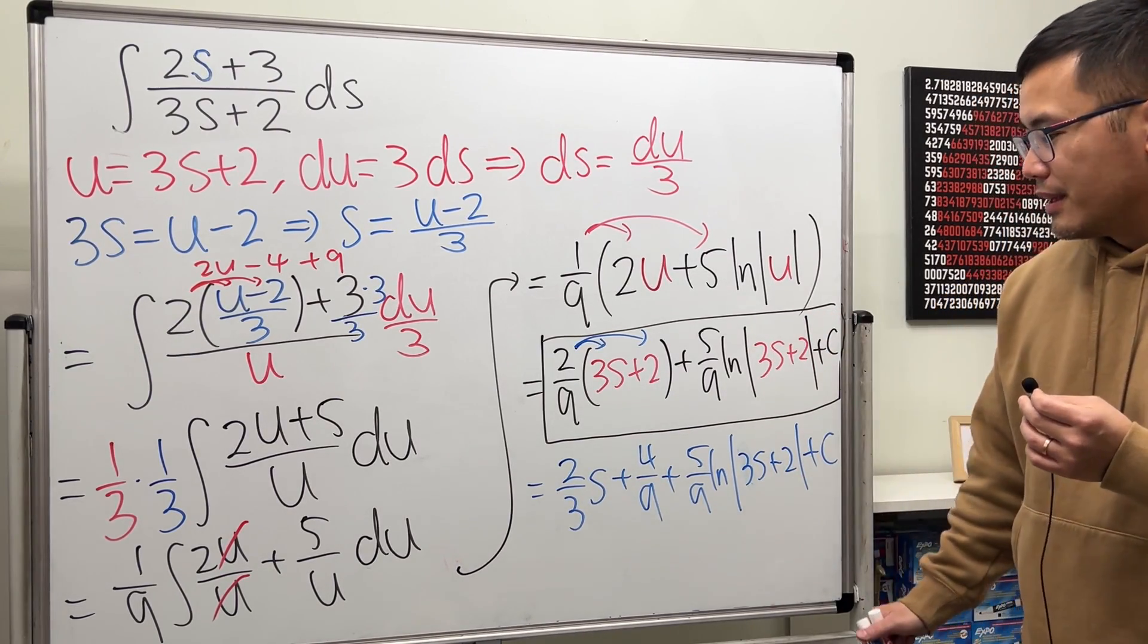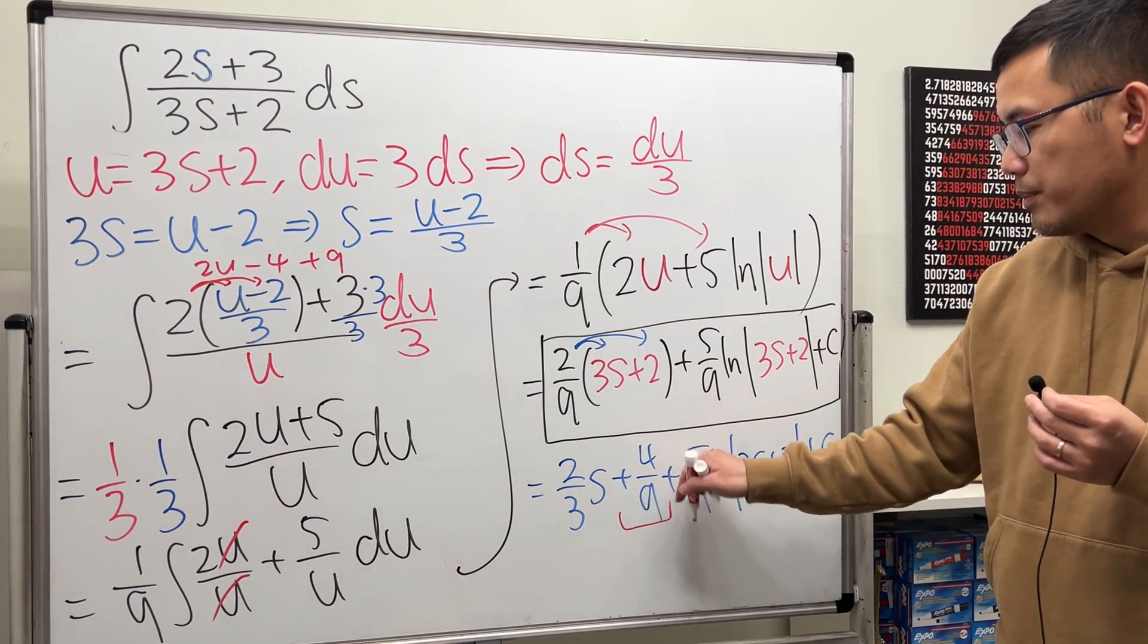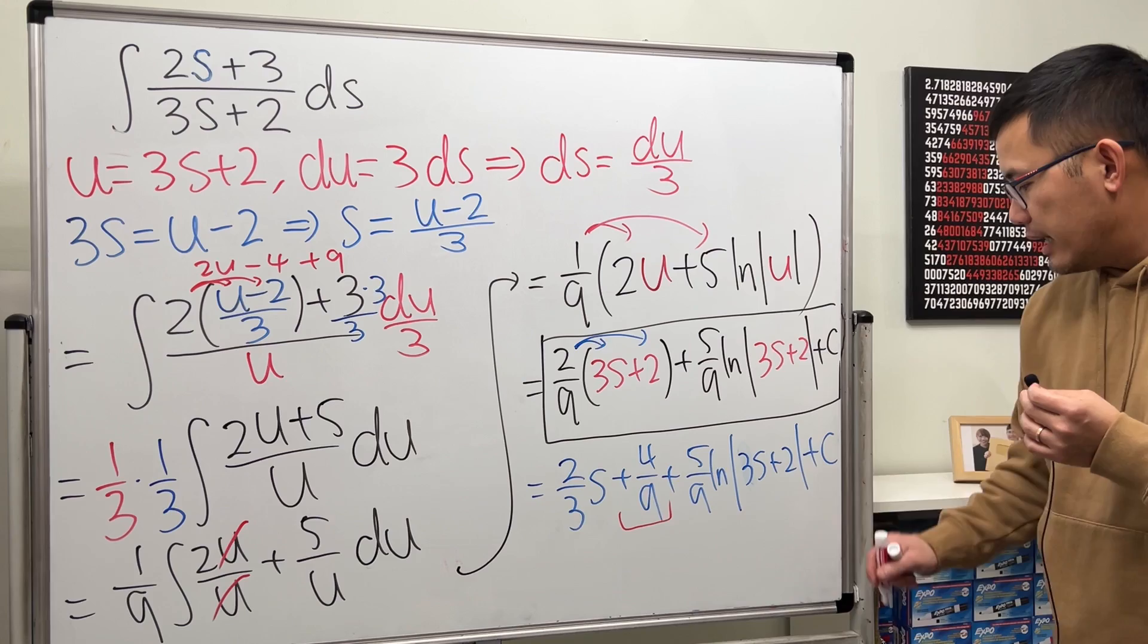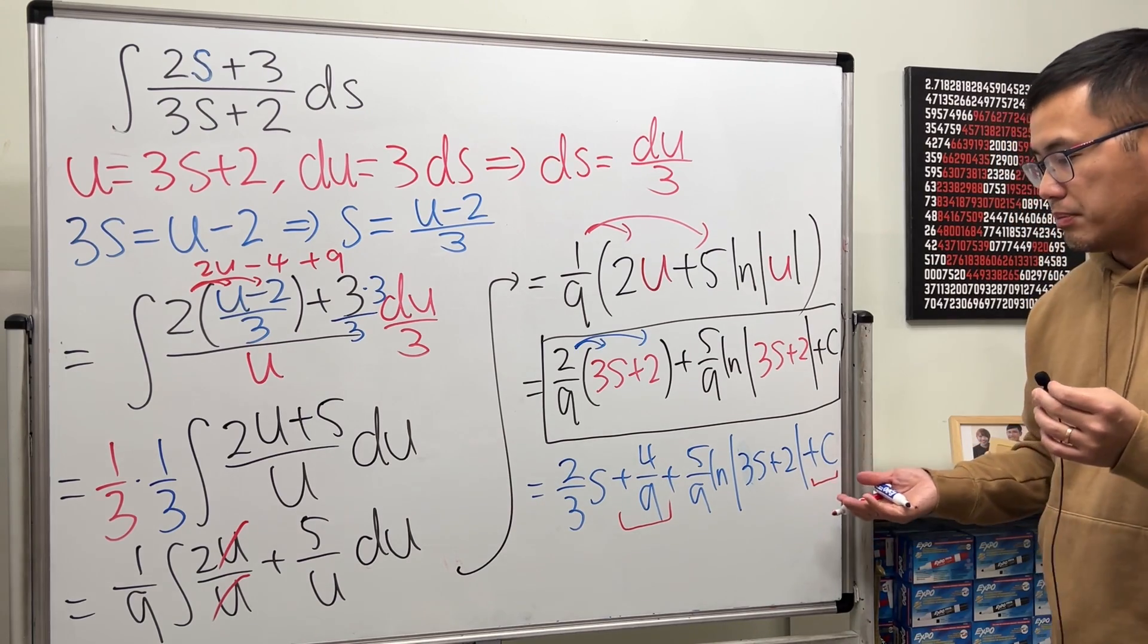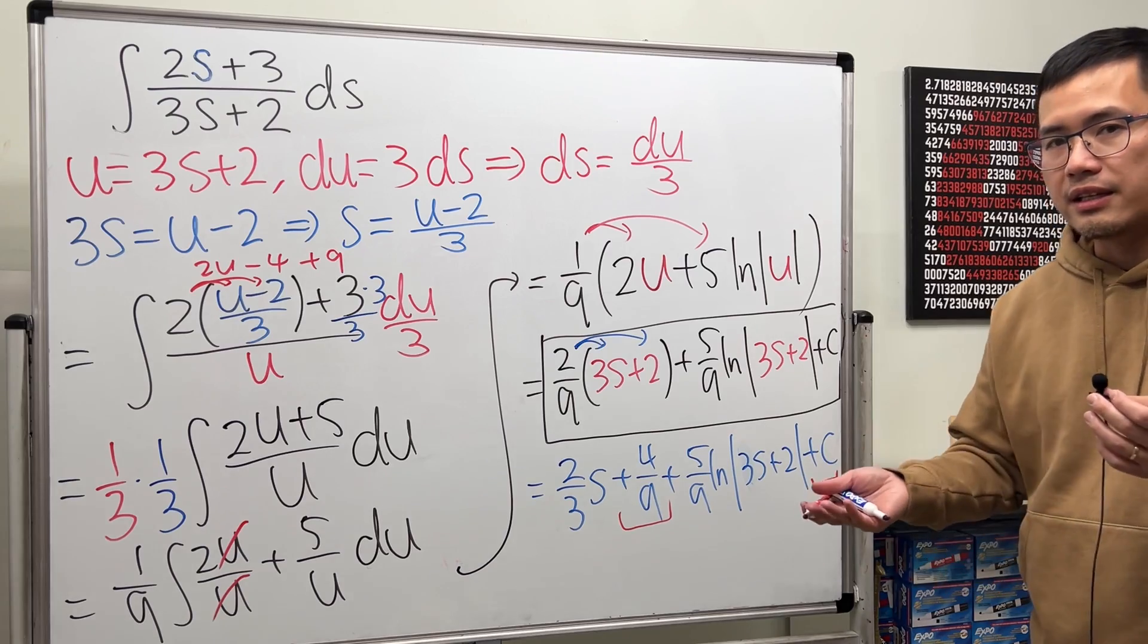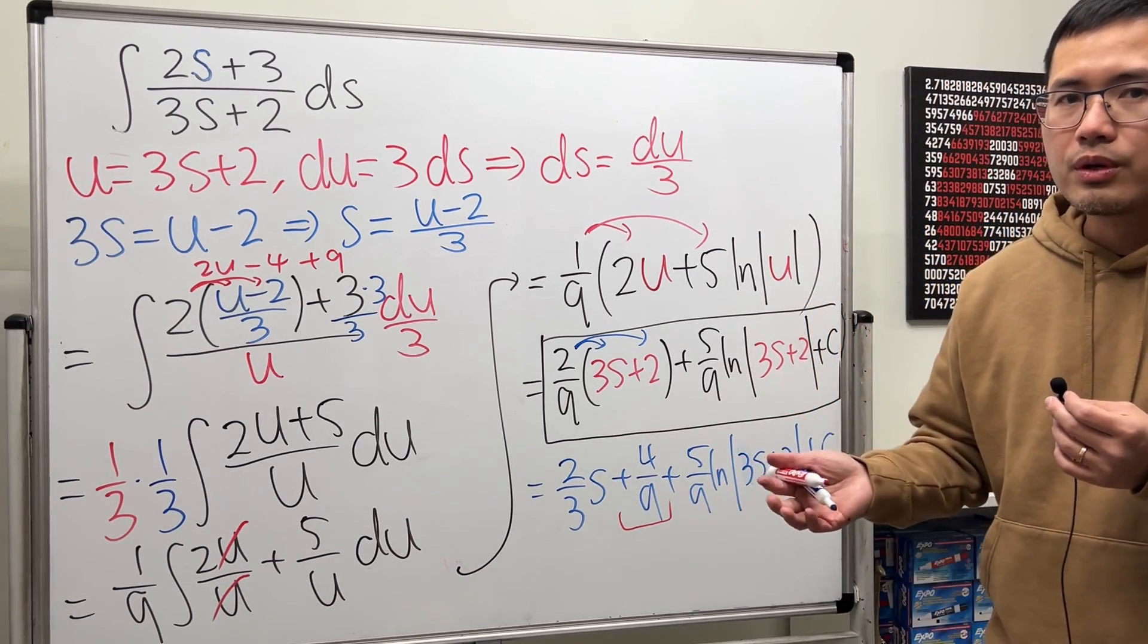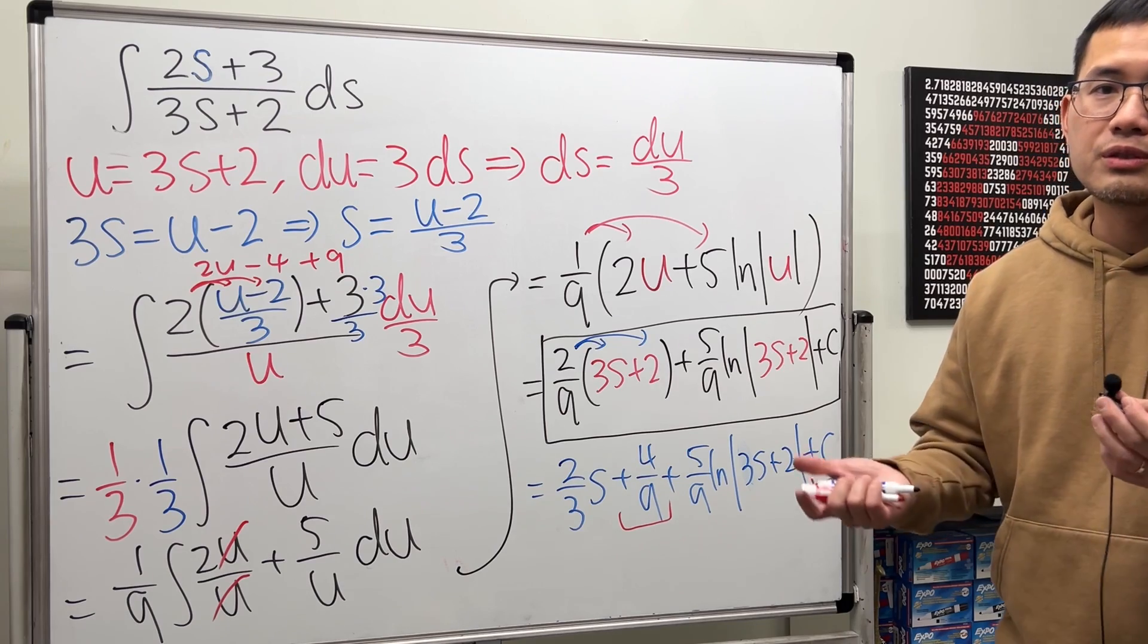But here's the deal. Notice that here we have a constant, 4 over 9. It has no variable right here, right? For this part. And then at the end here, we also have the plus c. The sum of two constants is just another constant. So sometimes you may see the answer in the back of the book or in the software.